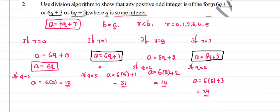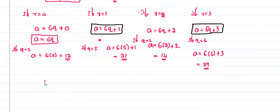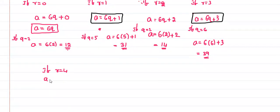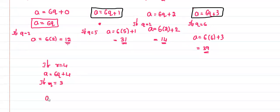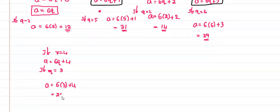If r is equal to 4, then a is equal to 6q plus 4. Taking q equals 3, a equals 6 into 3 plus 4, which is 18 plus 4 equals 22. This is an even integer.